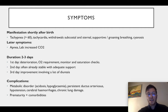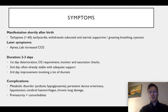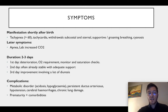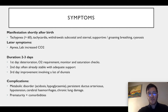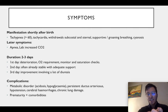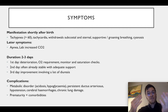Shortly after birth we see tachypnea, tachycardia, subcostal or sternal retractions in the child, some grunting breathing, and cyanosis of the hands or around the mouth. Later symptoms are apnea, lack of breathing, and increased carbon dioxide in the blood. The duration of symptoms is usually two to three days: the first day symptoms get worse, you need to give them oxygen, monitor their vital signs and check their saturation. The second day they are often way more stable and with adequate support they do quite well. The third day we see improvement of the symptoms and a lot of diuresis — so then it goes better again.